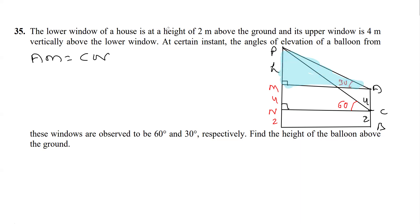So I apply tan. I applied tan 30 in this triangle. The perpendicular is H and the base is AM. So tan 30 is 1 over root 3 equals H over AM.